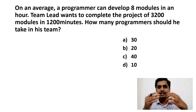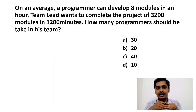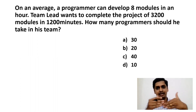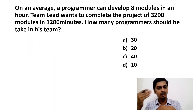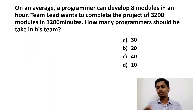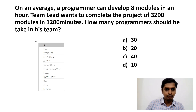A team lead wants to complete a project of 3200 modules in 1200 minutes. How many programmers should he take in his team? So one programmer will complete eight modules in one hour. This team lead has to complete 3200 modules in 1200 minutes — for that, how many people does he need to hire? This question is based on time and work.